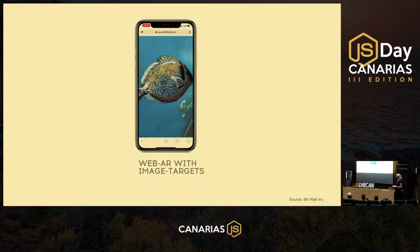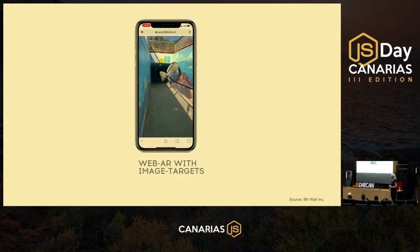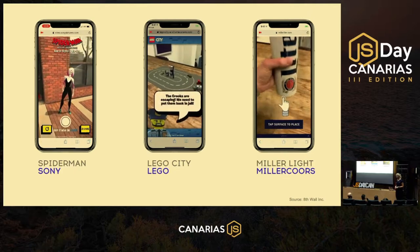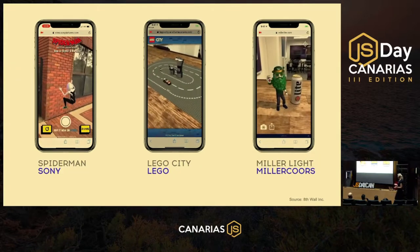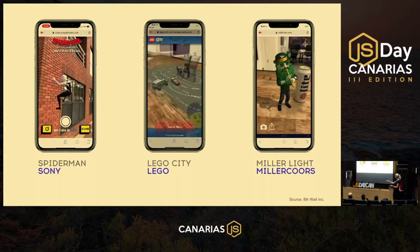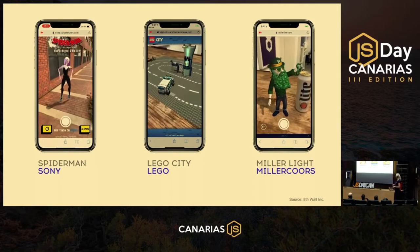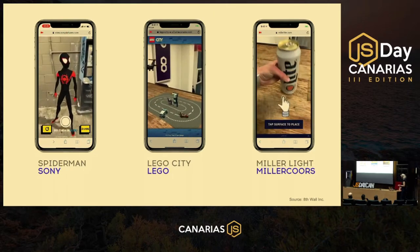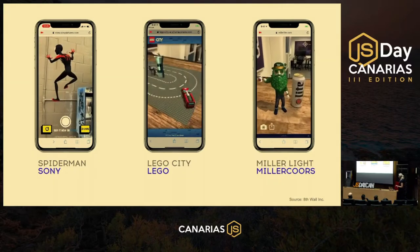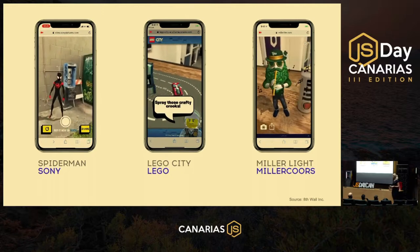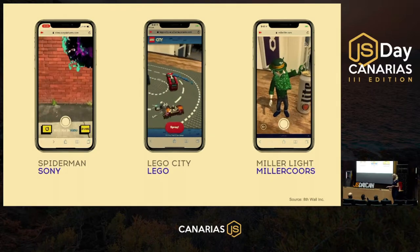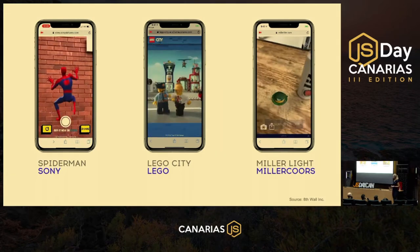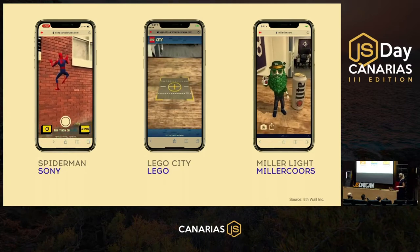With this library you can create image target examples or surface recognition — that means you can place an object right on top of a table or the floor. To get started, go to the 8th Wall website and register to get a test link for developing on your local machine. If you want to push to production, you'll need to buy a license — so it's not open source and free, unfortunately.